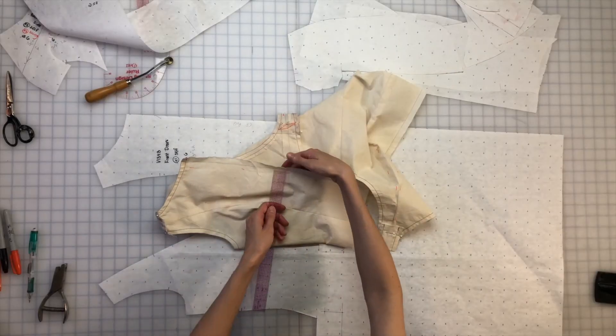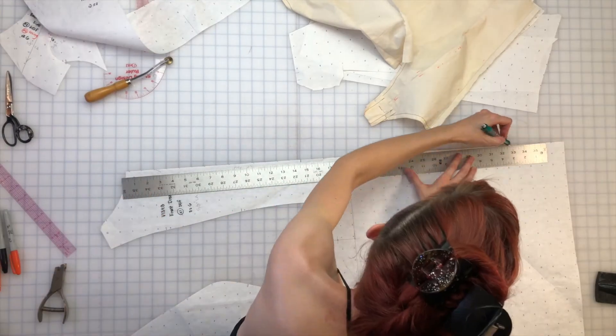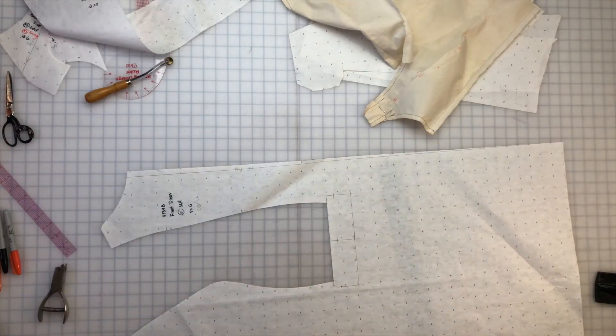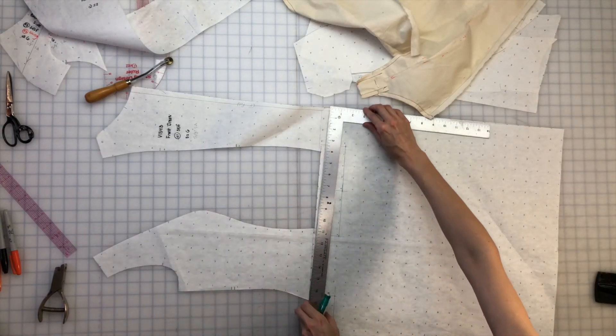On the front I have to realign the grain line. I pinched out one inch at the neck, so I'm making a new center front grain line from a half inch at the neck to zero at the hem. Then I have to re-square the pleats so they don't end up crooked and off grain.